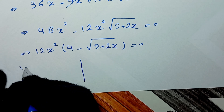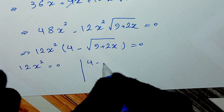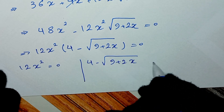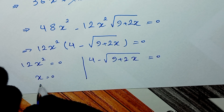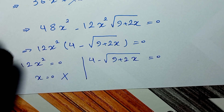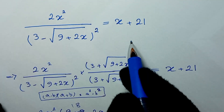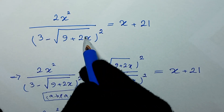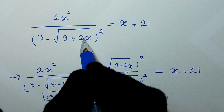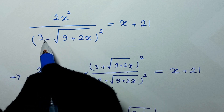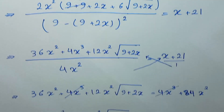From this factored form we have two solutions: 12x² equals 0, giving x equals 0, which we reject because substituting x equals 0 into the original equation makes the denominator 3 minus square root of 9, which is 3 minus 3 equals 0. So x equals 0 is rejected.